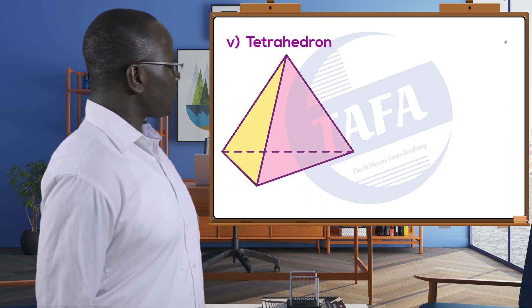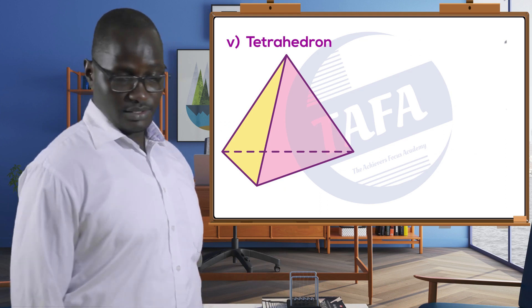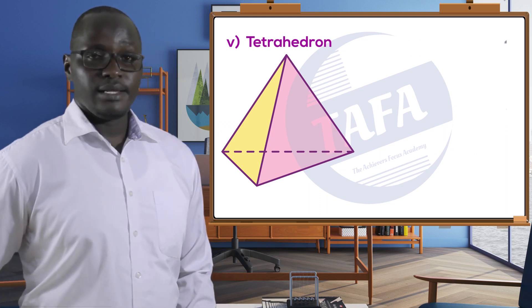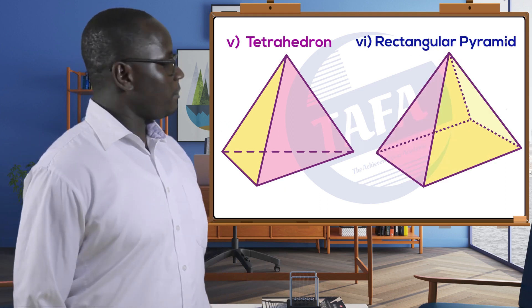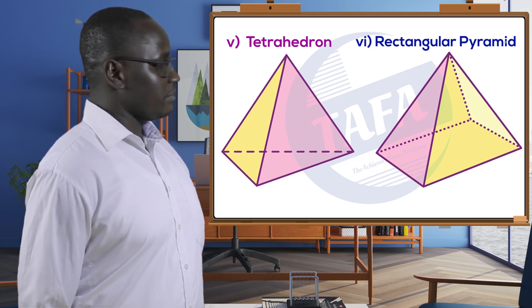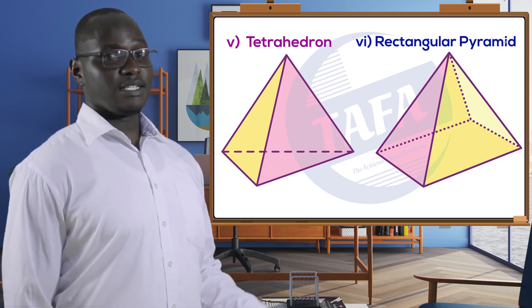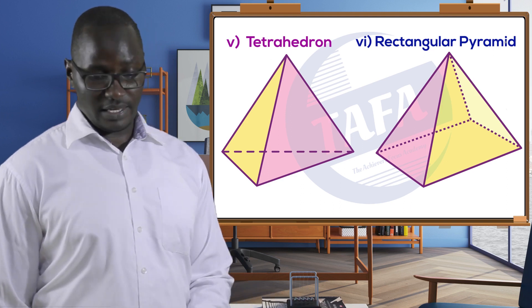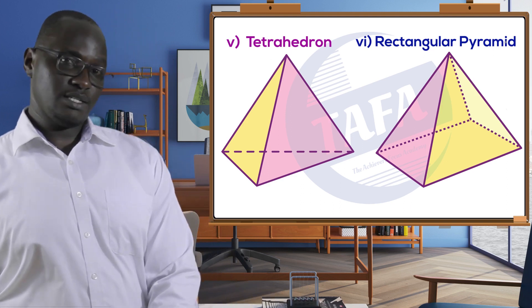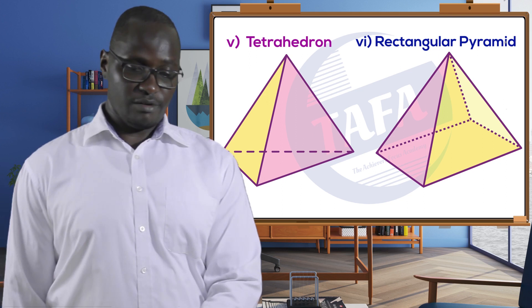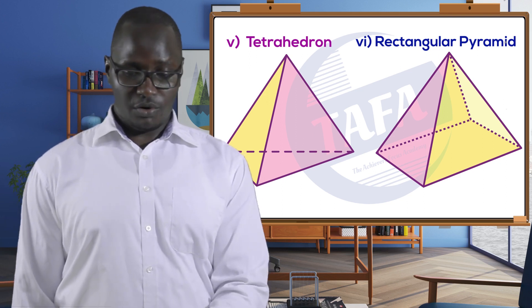There is a tetrahedron and also a rectangular-based pyramid. These are some of the examples of solids that we have — there are many more.